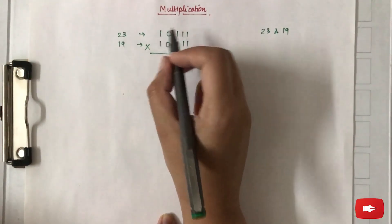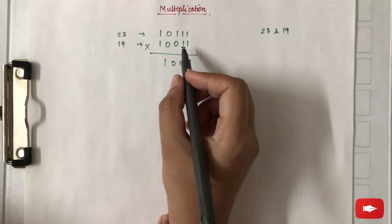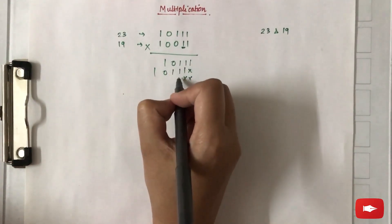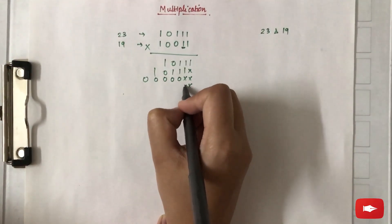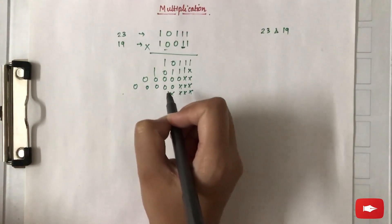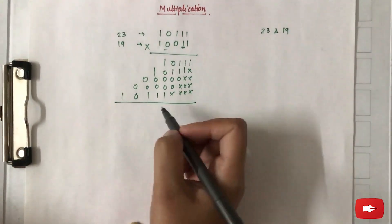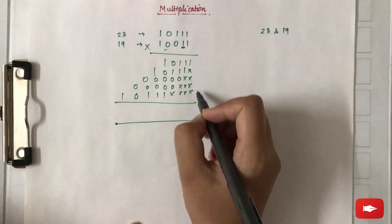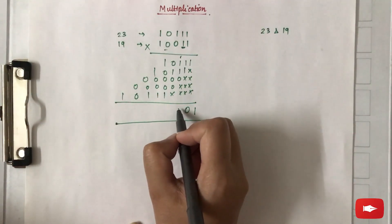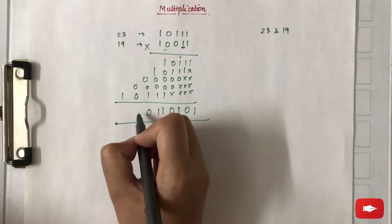When multiplying, you start by multiplying 1 with the first number to get that row, leaving appropriate spaces. For the second bit we leave two spaces, and because it is 0 we skip it. For position 1, 2, 3, 4, 5 — where there is a 1 — we write that partial product. Adding all the partial products together, we get 101011011.